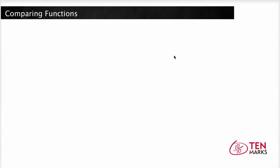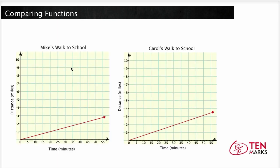In this lesson you'll be able to compare functions that are represented graphically or as an equation. We're going to look at the example of Mike and Carol walking to school. These graphs below show Mike's walk to school in comparison to Carol's walk to school. Now look at these graphs and write an equation for each. Who walks faster?